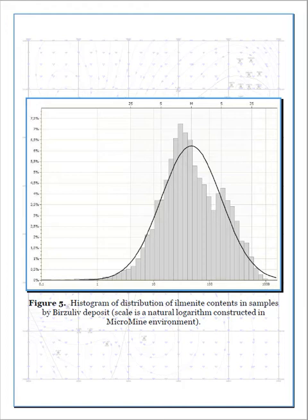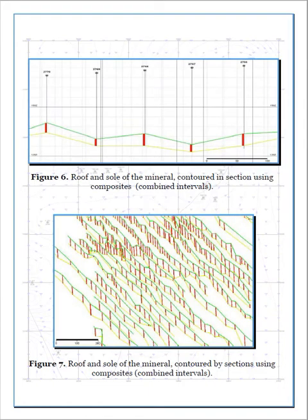In the case of the Berzoloff deposit, it seems that first an ore stratum was formed with the primary distribution of Ilmenite in it, and then the ore component was redistributed within the stratum, most likely under the influence of gravitational factors. This is evidenced by the increased values of Ilmenite content in the lower part of the thickness, closer to the sole and roof of the weathering crust.